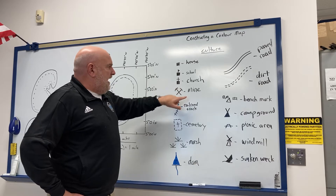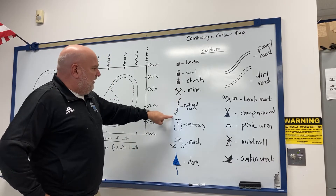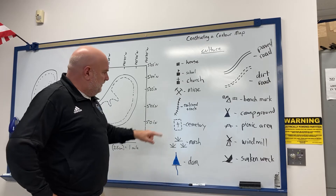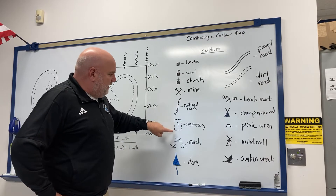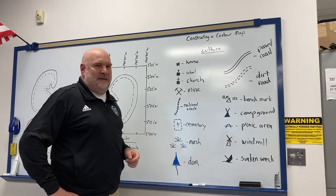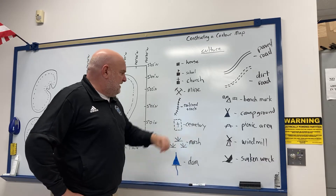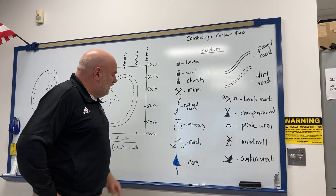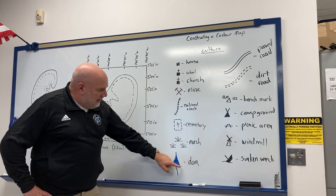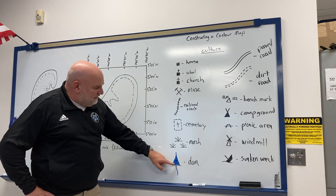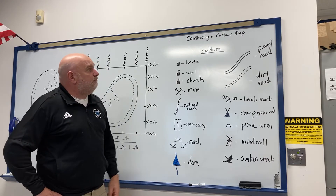Crossing pickaxes represent a mine. What looks like a zipper is a railroad track. A dashed square shape with a little cross in it, or sometimes with 'cem' written in it, is a cemetery. That symbol there is a marsh, and that one would be a dam — you can see the water backed up with a stream coming out.